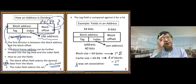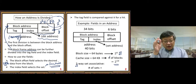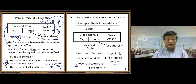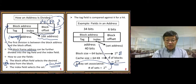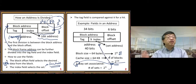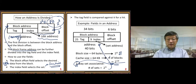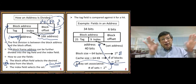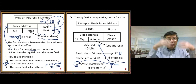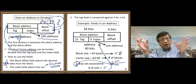With two-way set associative, we divide the number of blocks by 2, giving 2^9 sets. That means we need 9 bits for the index field. The remaining 25 bits go to the tag field. So the 40-bit address is split: 25 bits tag, 9 bits index, 6 bits block offset.